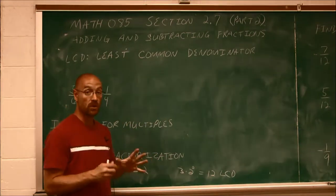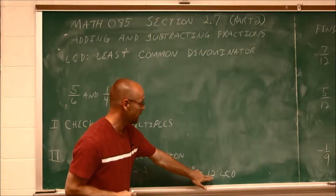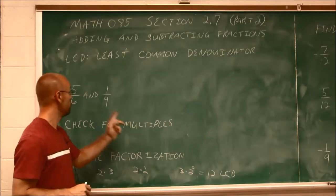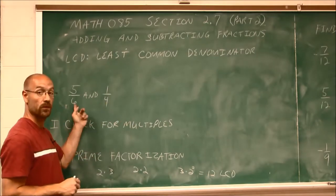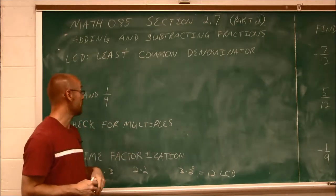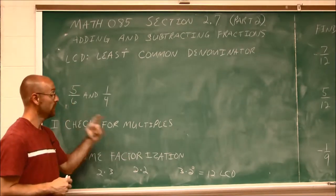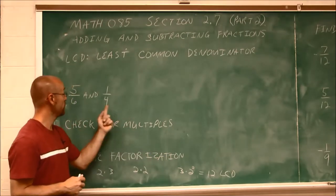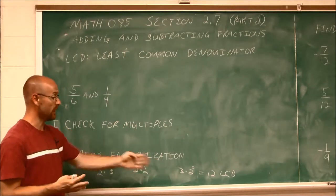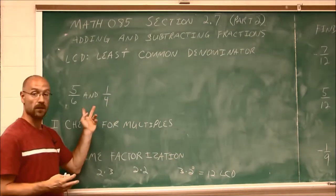One way to check it — and you should always check it — is to ask: is my LCD evenly divisible by both denominators? If so, I know I have a common denominator. 12 divided by 6 is 2; 12 divided by 4 is 3. So yes, this is divisible by both of my denominators.